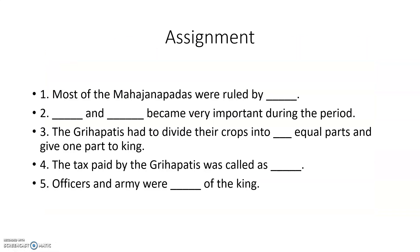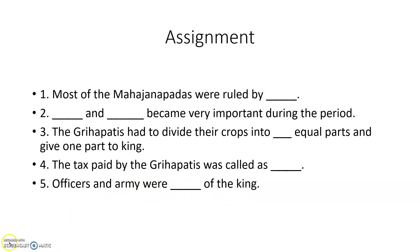Now, a small assignment for you. Fill in the blanks: Most of the Mahajanapadas were ruled by [blank]. [Blank] and animal sacrifices became very important during the period. The grahapathis had to divide their crops into [blank] equal parts and give one part to the king — the tax paid by the grahapathis was called [blank]. Officers and army were [blank] of the king.